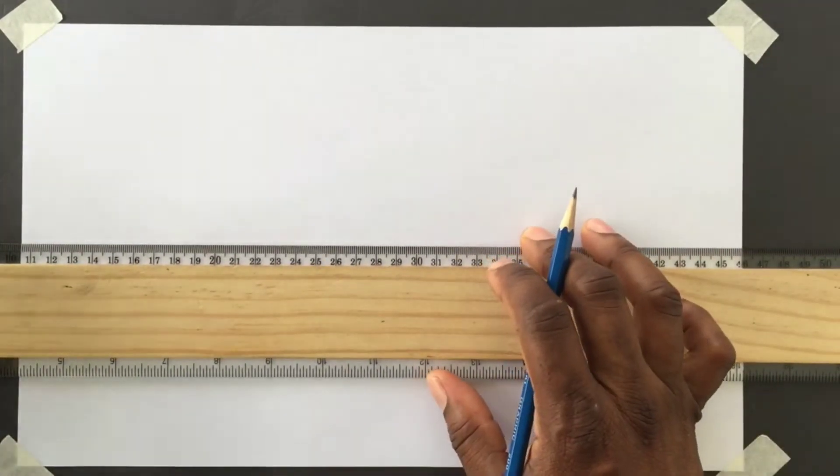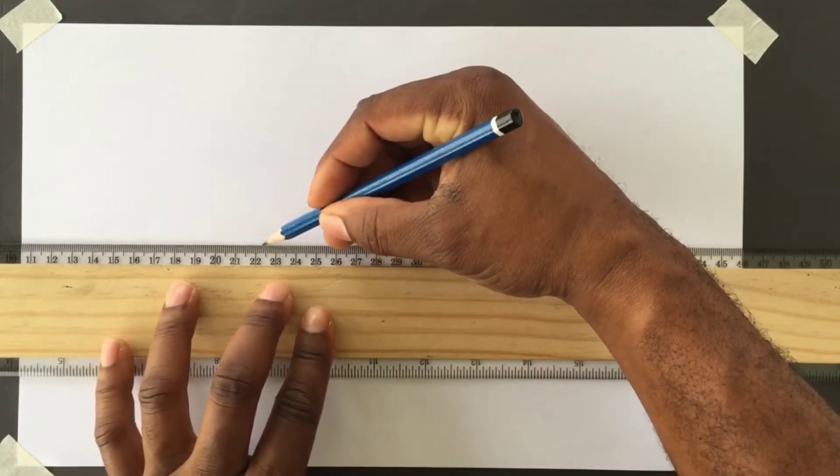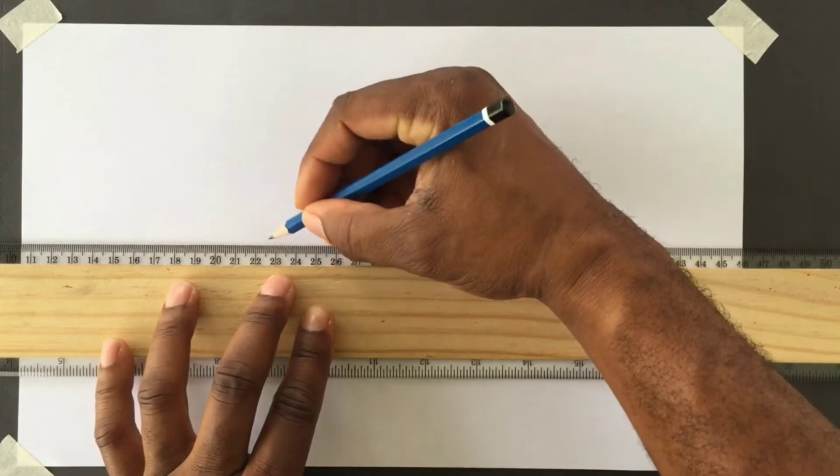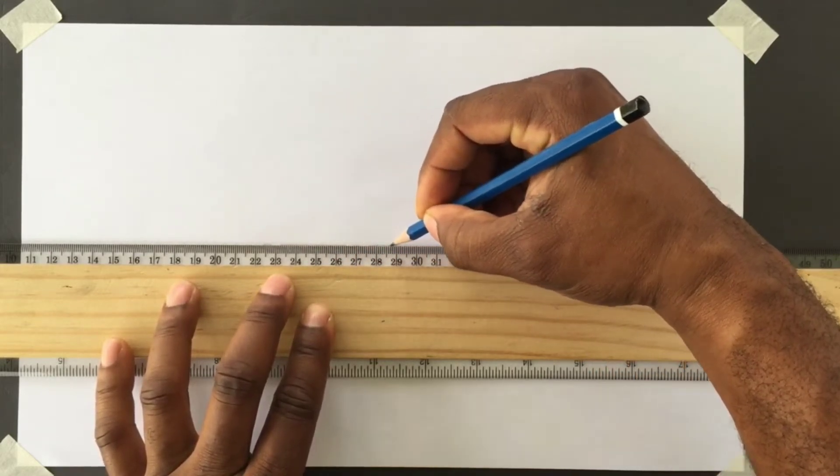A center line consists of a long and short alternating dash. We will first draw a center line horizontally using our T square.